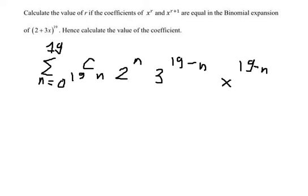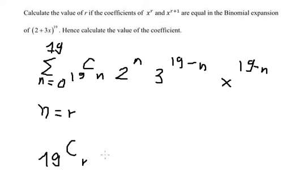The question states that the coefficients of s to the power of r and s to the power of r plus 1 are equal. So let's put n equal to r. We will have 19Cr, multiplied by 2 to the power of r, multiplied by 3 to the power of 19 minus r.